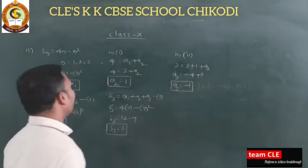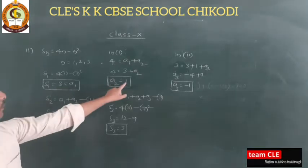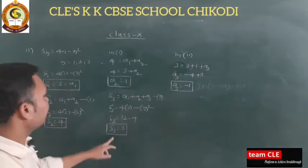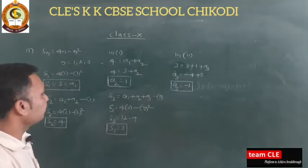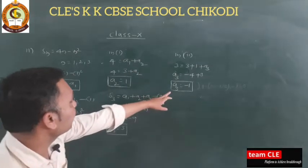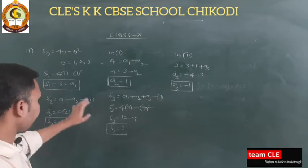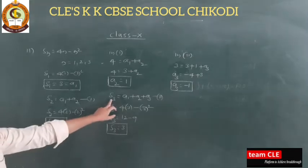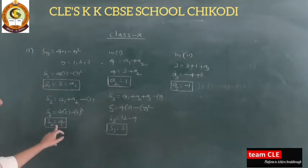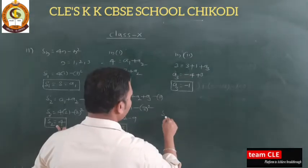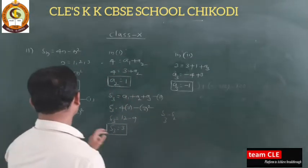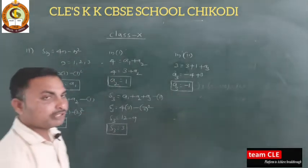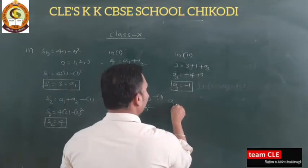To find a₃, substitute into the equation: S₃ = a₁ + a₂ + a₃, so 3 = 3 + 1 + a₃, giving a₃ = 3 − 4 = −1. Alternatively, a₃ = S₃ − S₂ = 3 − 4 = −1. So a₁ = 3, a₂ = 1, a₃ = −1.